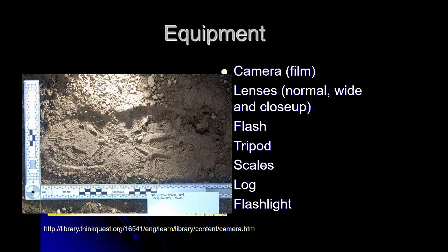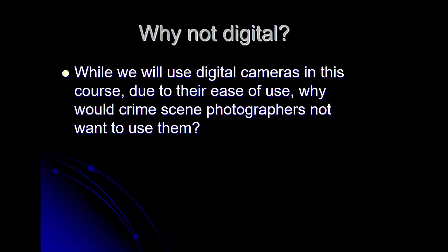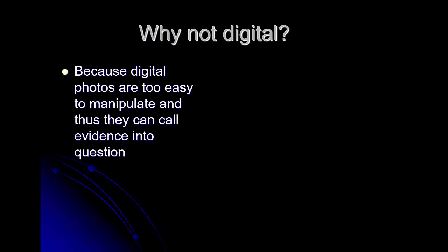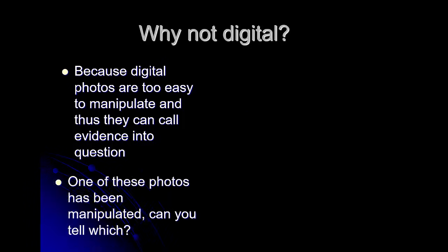Before I mentioned we generally like to use film as our camera choice. While we're going to use digital cameras in this class — mainly the cameras on our cell phones, since they're easy to use and easy to get — why would crime scene photographers not want to use them? Because digital photos are too easy to manipulate, which can sometimes call evidence into question. If there's even a hint that a photo has been manipulated or Photoshopped, that would be problematic when presenting that image in court.